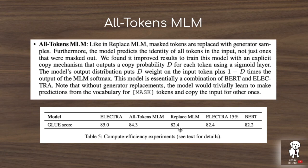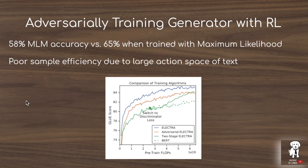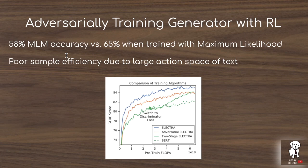The authors also experiment with adversarially training the generator using reinforcement learning. The action space of different tokens is treated as discrete actions taken by the RL agent at each time step, conditioned on the input as the state representation. However, they find only 58% masked language modeling accuracy when using the RL-trained agent, compared to 65% when training with maximum likelihood — the standard approach for masked language models.